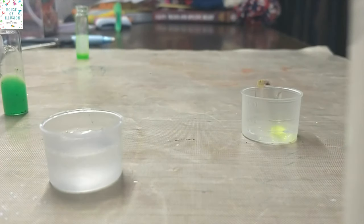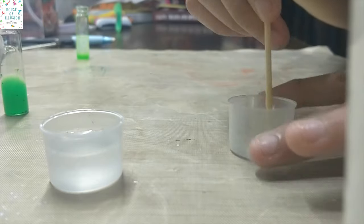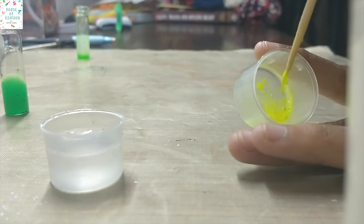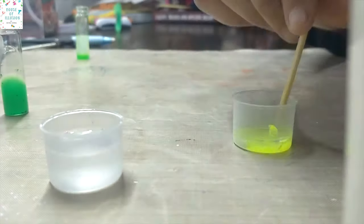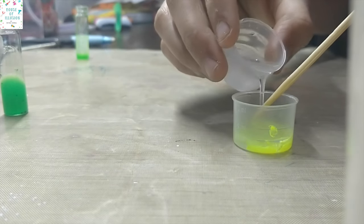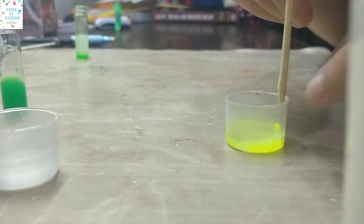When the first layer is firm enough to take the second layer, mix the neon yellow pigment like we mixed the green pigment and let it set again at an opposite inclined angle.